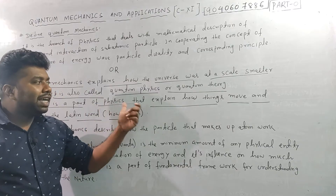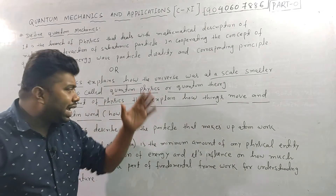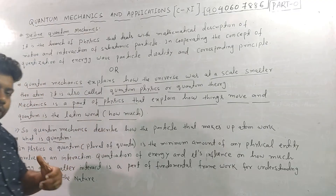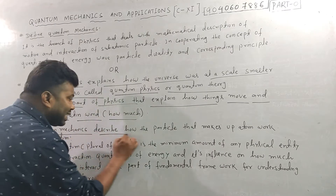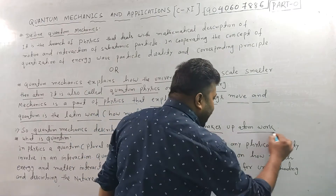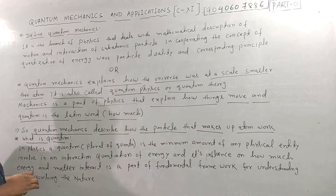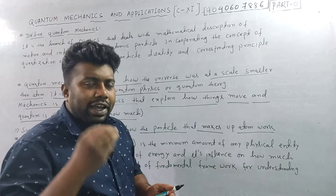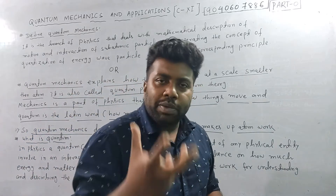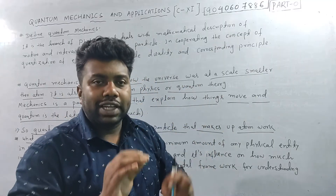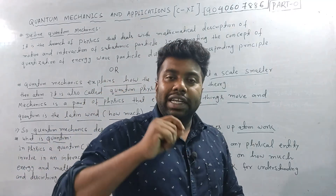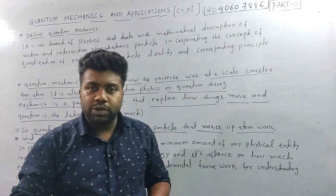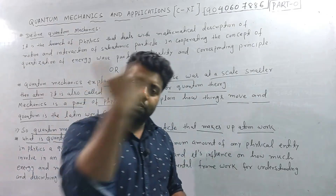Quantum mechanics is the part of physics that explains how things move. Quantum describes how the particles that make up atoms work — at the sub-atomic level, at a smaller and smaller level. The first thing to consider is the speed — things happening in fractions of a second.